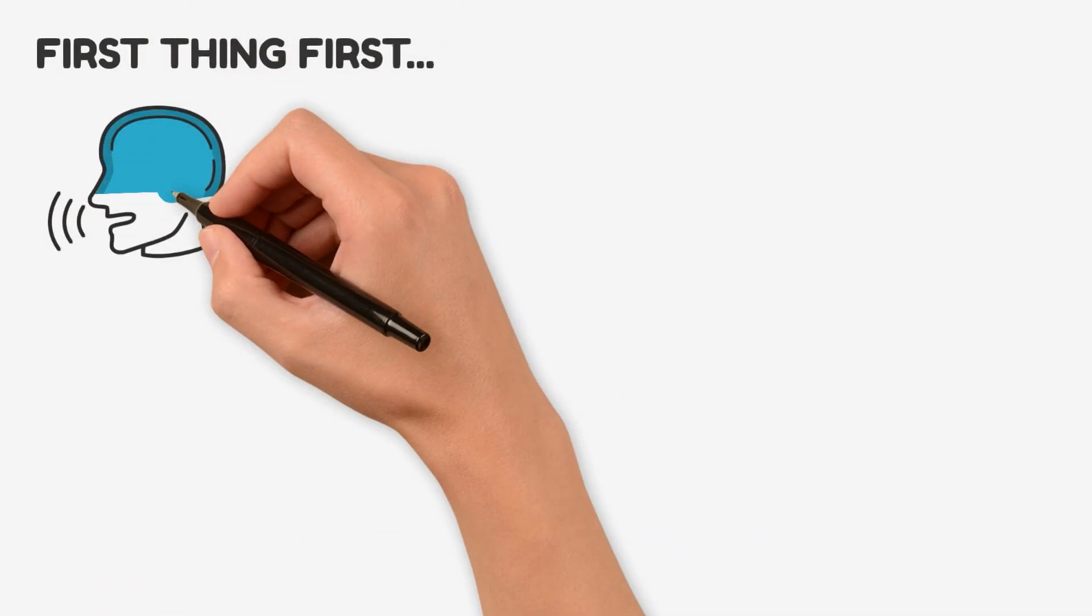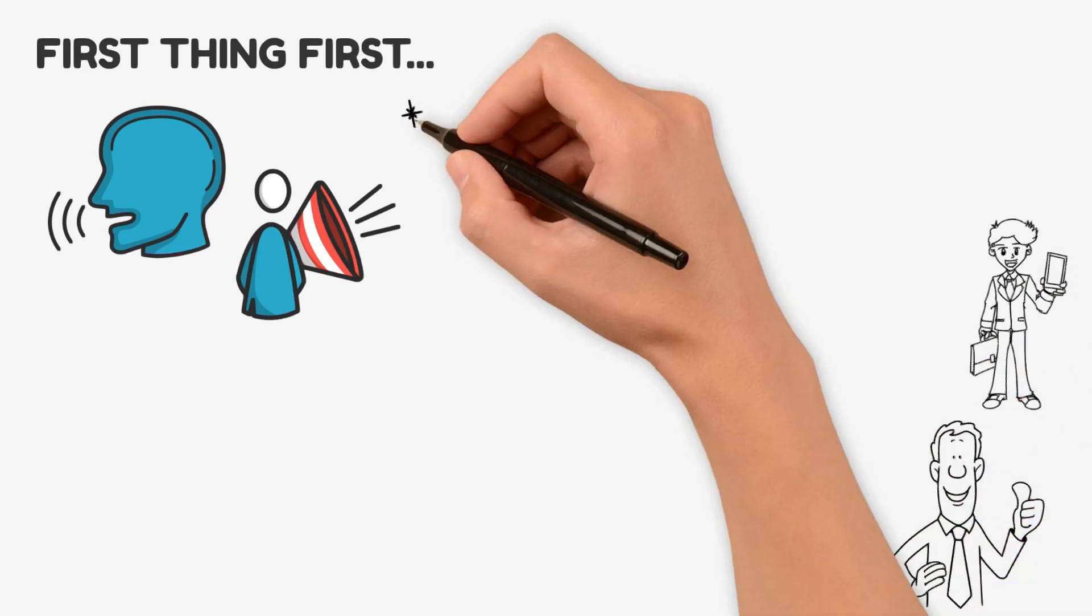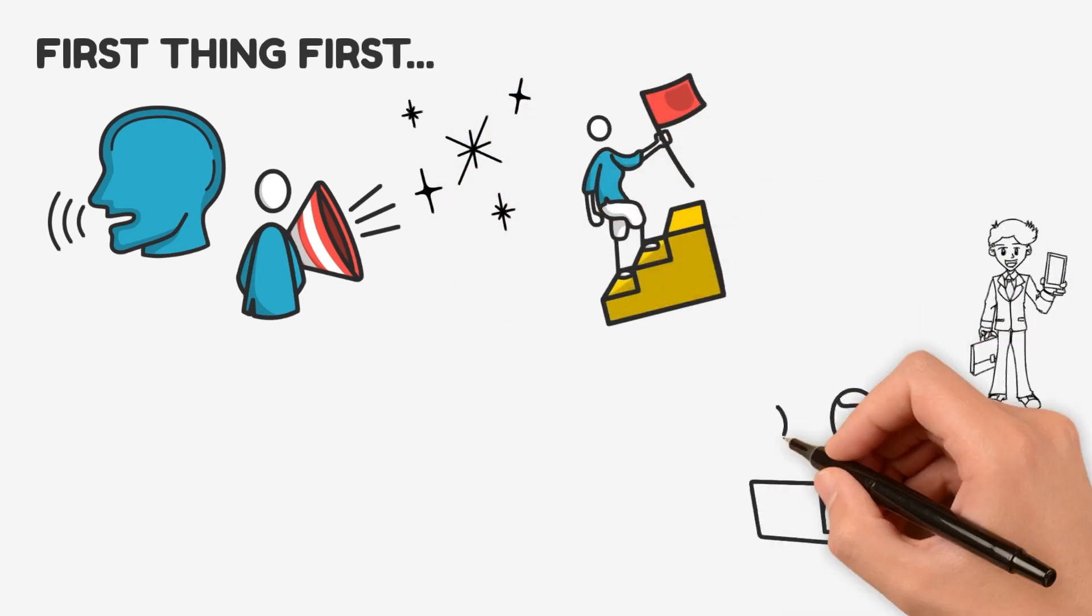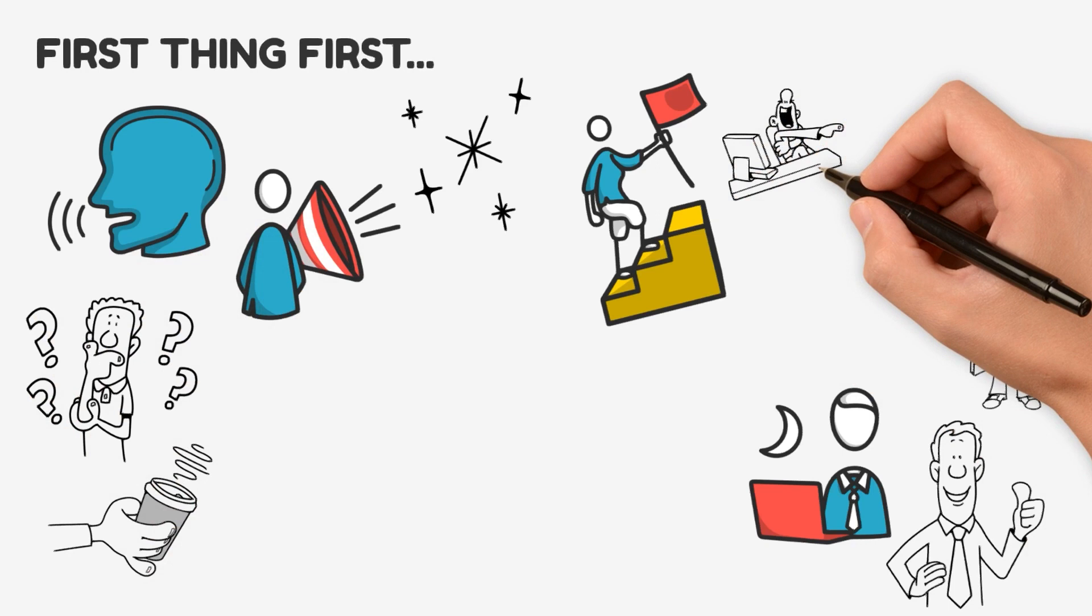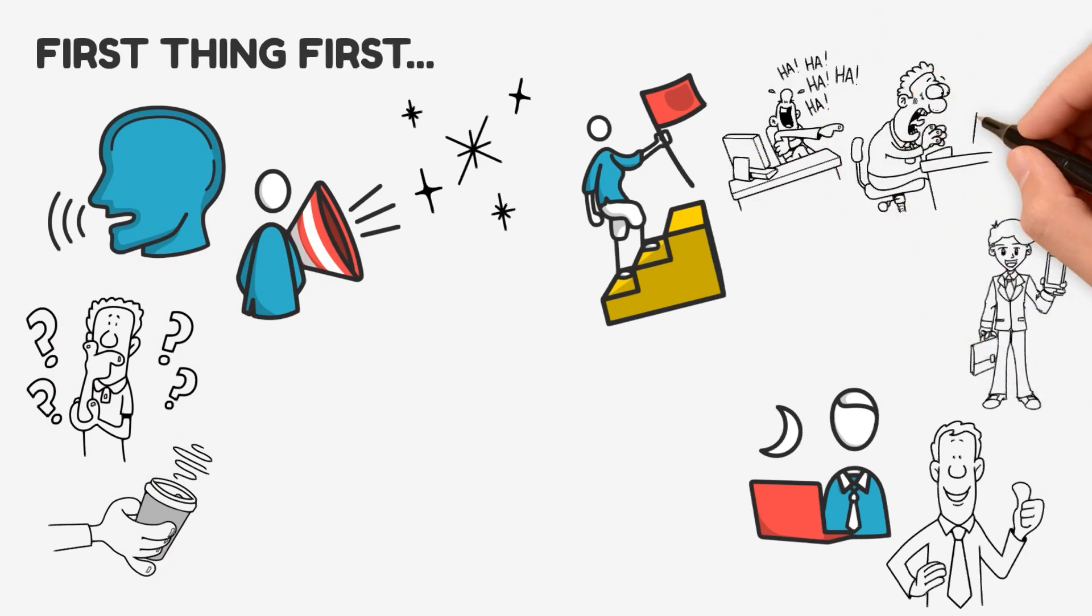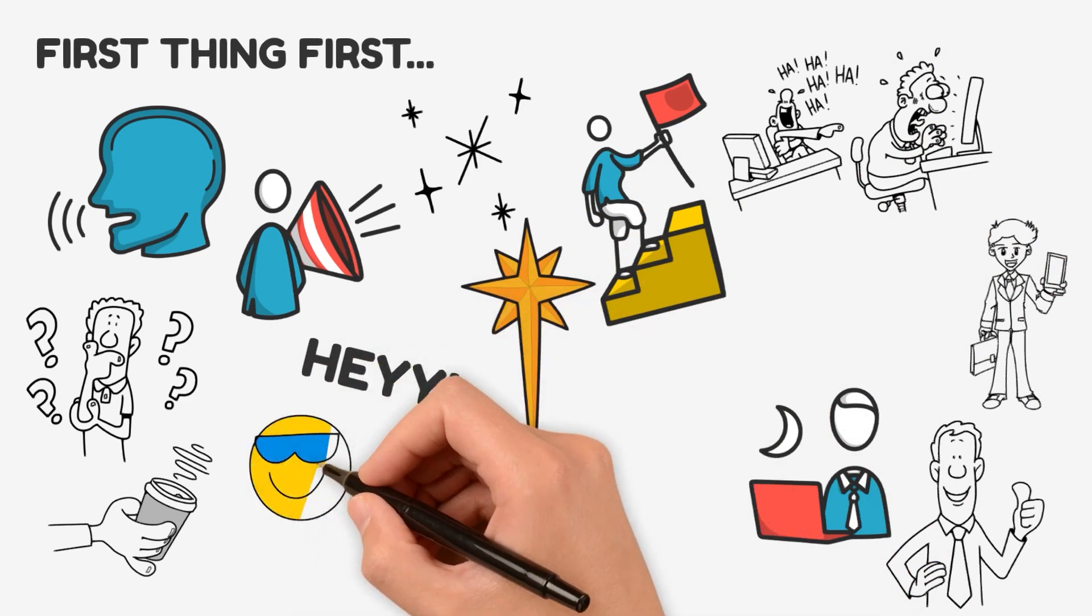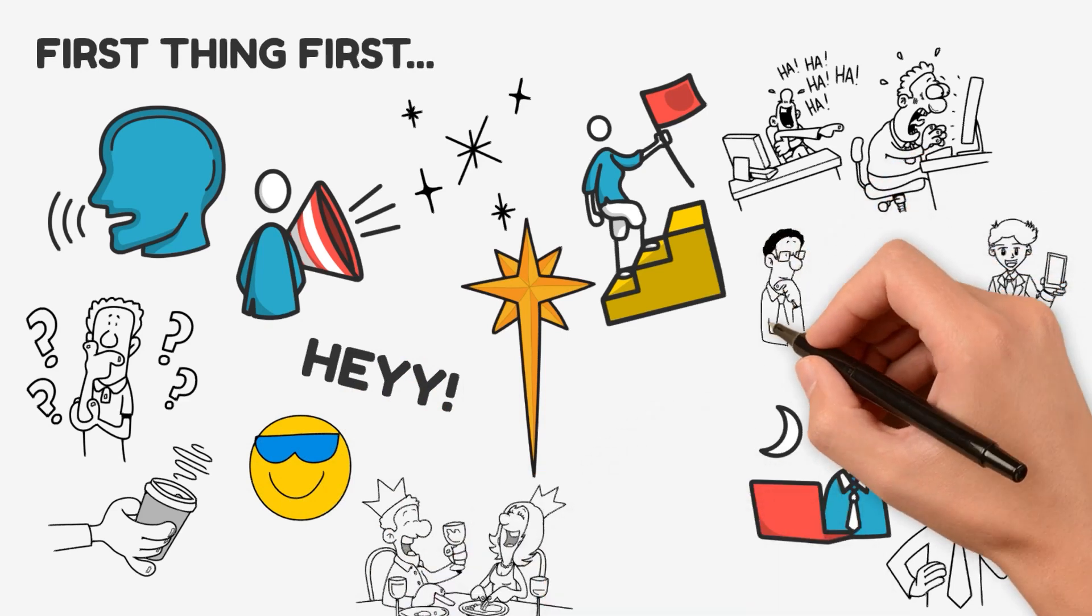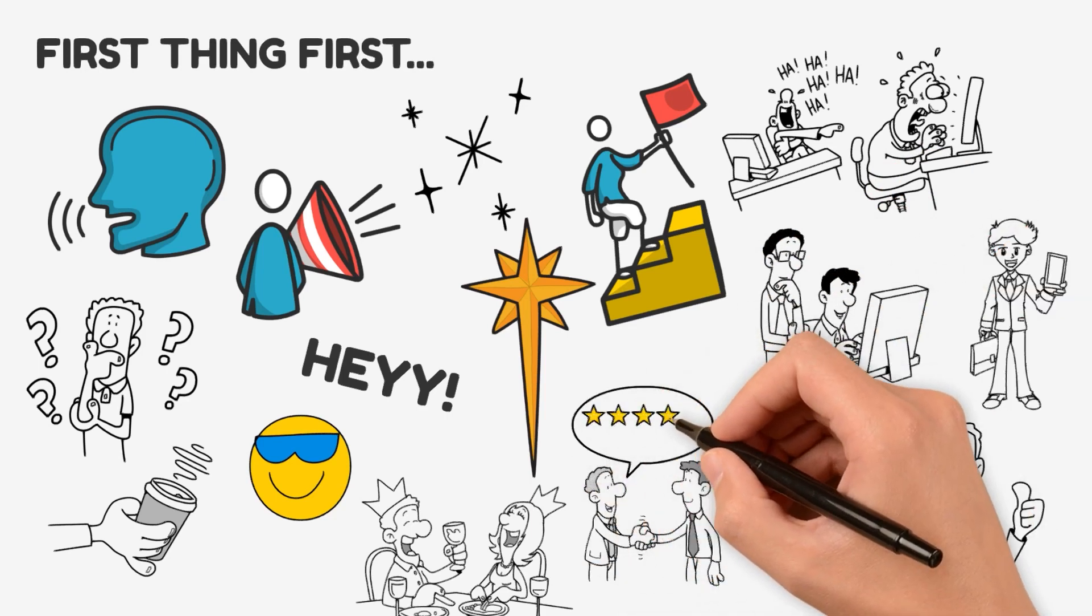First things first, let's ditch the monotone voice. Spice it up with some enthusiasm. Show them that you're not just a walking resume, but a vibrant and interesting individual. Next, let's sprinkle in some personal touch. Highlight your achievements, not just your job responsibilities. Did you save the company from a coffee shortage crisis? Did you break the record for most office pranks pulled? Let those accomplishments shine. And hey, don't forget to add a pinch of humor. Share a funny anecdote or a quirky story that showcases your personality. Let them see that you're not just a serious professional, but someone they'd actually enjoy working with.